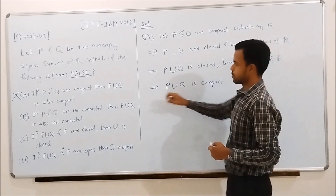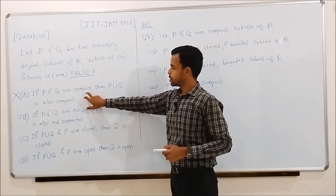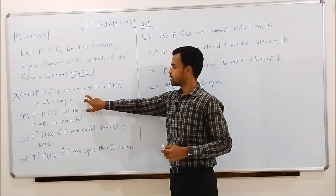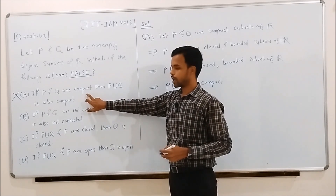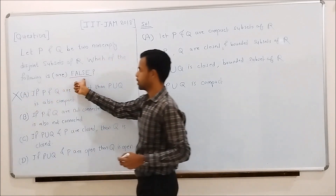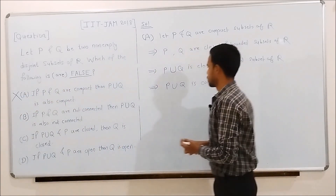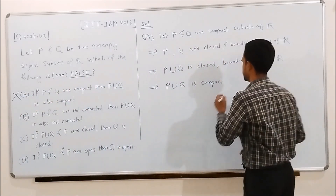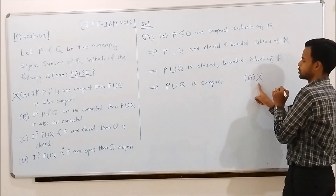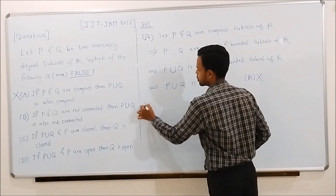Again applying the Heine-Borel theorem — a subset of R is compact if and only if it is closed and bounded — we conclude P union Q is compact. Thus, we have proved that the statement in option A is true, so we do not have to select it.